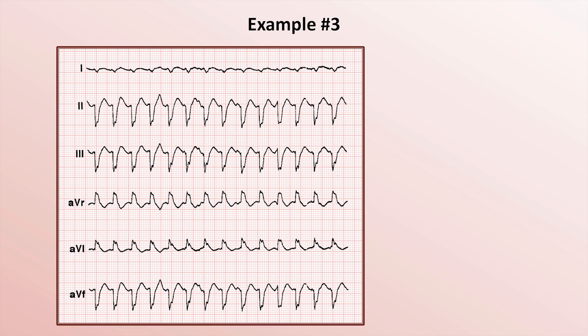The number of big boxes between each QRS complex falls somewhere between 1 and 2, giving a rate range somewhere between 150 and 300. If you remember that each large box is 200 ms, that means there are 5 large boxes in 1 second — so let's see how many QRS complexes occur in 1 second.